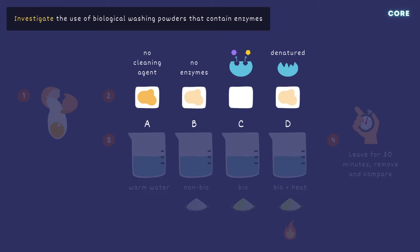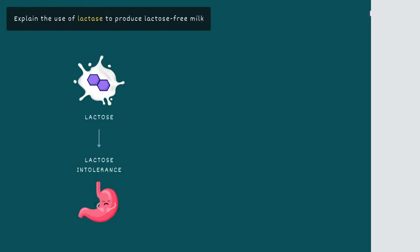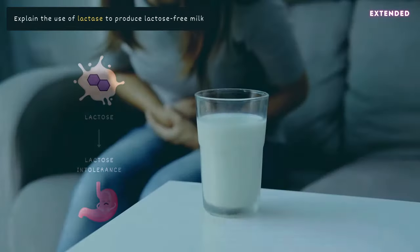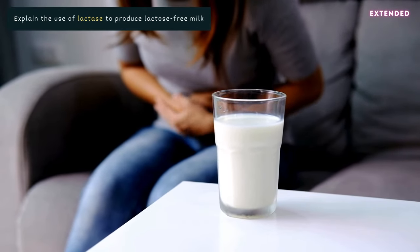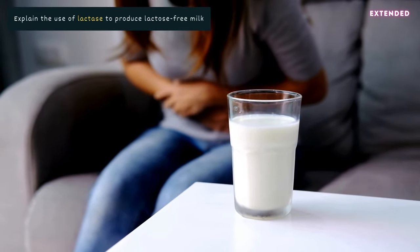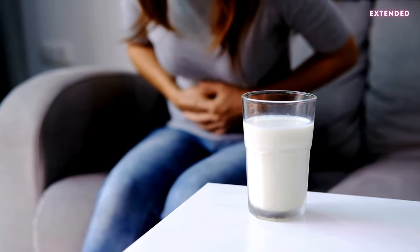That's everything you need to know for core, so we'll move on to the extended section, beginning with the production of lactose-free milk. Lactose is a sugar found in dairy products. Some people are intolerant to lactose because they don't produce enough of the enzyme that breaks it down. Instead, it's fermented by bacteria in the gut, leading to symptoms like bloating, stomach pain, and flatulence.